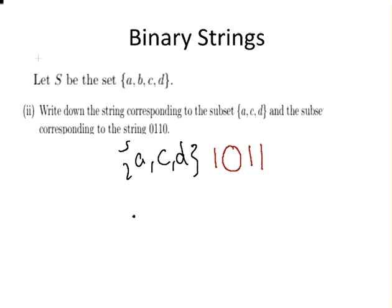Now in this next case, 0110. Well, we have A is not present, B is present, and C is present. So that is the subset corresponding to the string 0110.